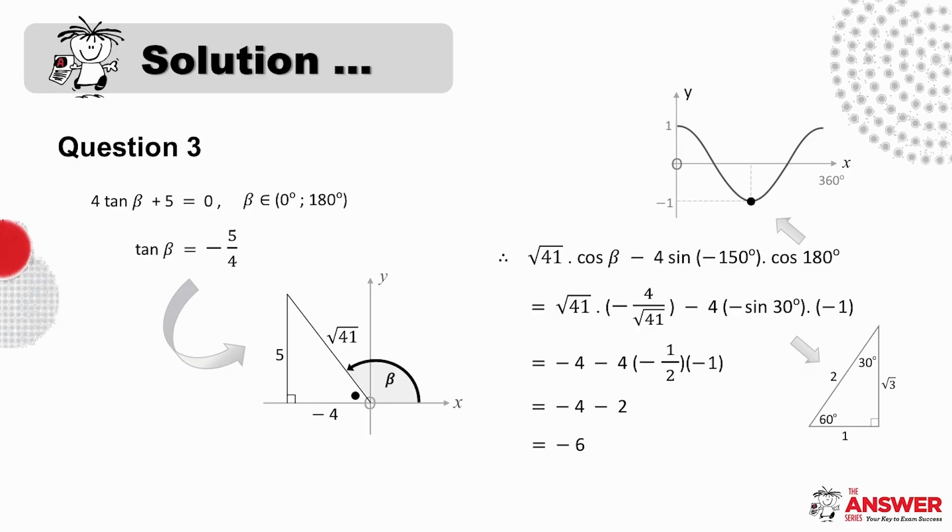Our question 3 is a slightly different type of sketch question to what we've done previously. Here you are given information about an unknown angle, in this case beta, enough to know which quad it belongs in. In this case tan is negative and beta needs to lie between 0 and 180 degrees. In other words, beta must be a second quad angle. In order to make the sketch, we place beta in the second quad and complete this triangle here towards the x axis. This will then be our reference angle, and tan is opposite over adjacent. In this case, y is positive and x is negative because we are in the second quad. So place 5 here and minus 4 here. The third side is then root 41.